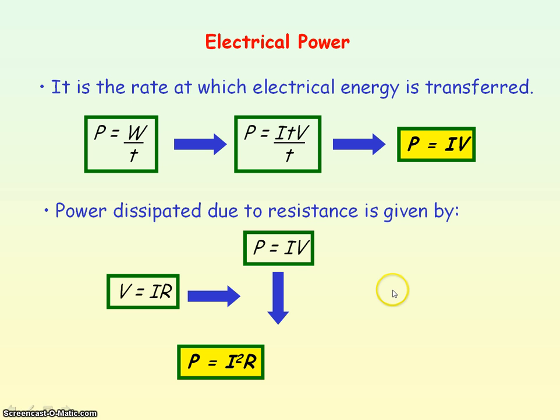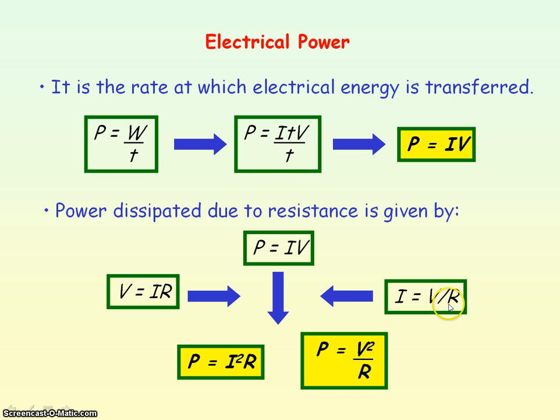To get that equation, we need to eliminate current I. Current I is voltage divided by resistance. If we substitute that into this equation, we get voltage divided by resistance times voltage, so power equals V squared divided by R.